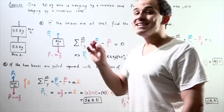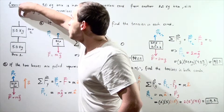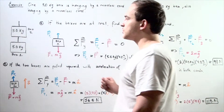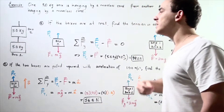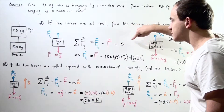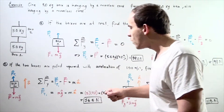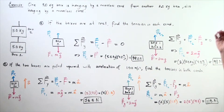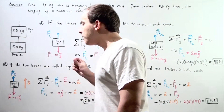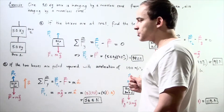Now let's go to part B. Suppose our two boxes are being pulled upward with an acceleration of 1.5 meters per second squared. We follow the same procedure, except now we're no longer setting the sum equal to zero, but equal to mass times acceleration, where acceleration is 1.50 meters per second squared. Here we have box number one traveling upward with that acceleration.